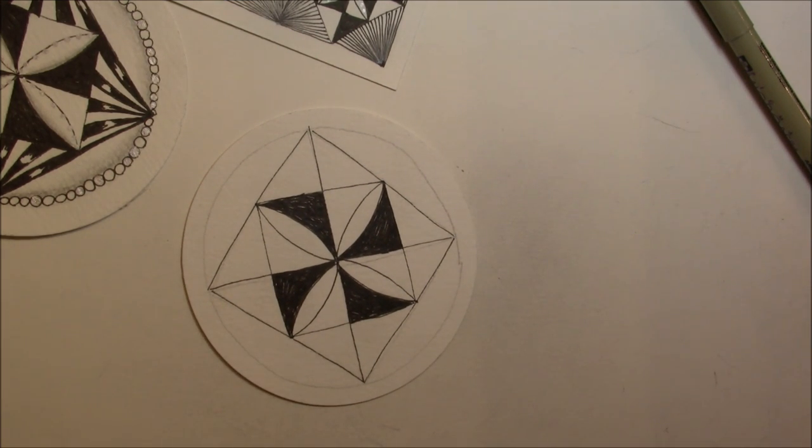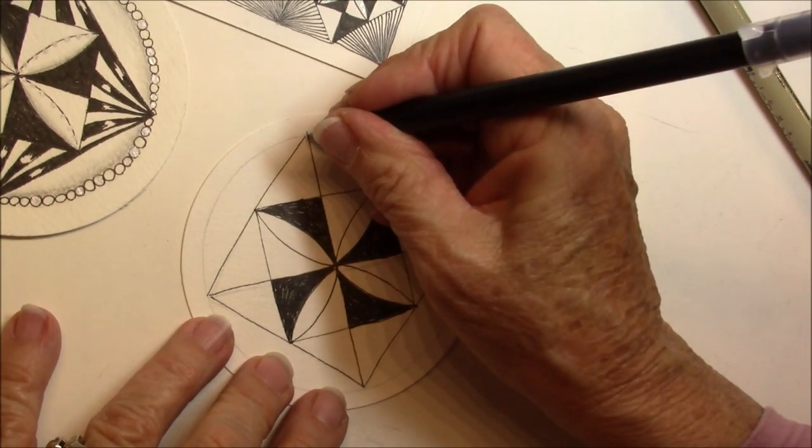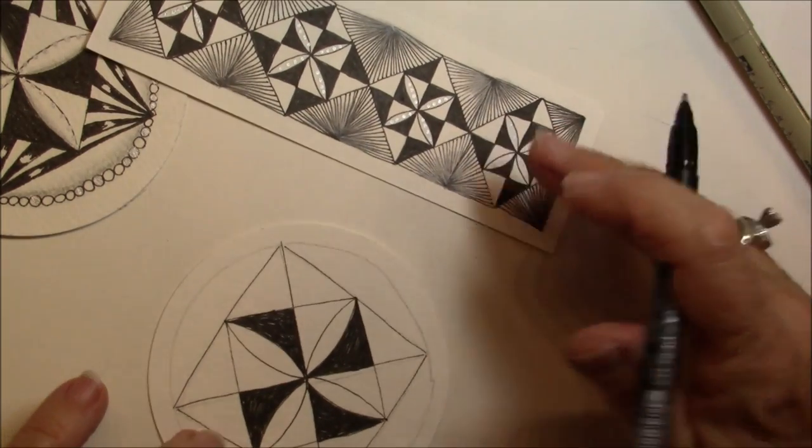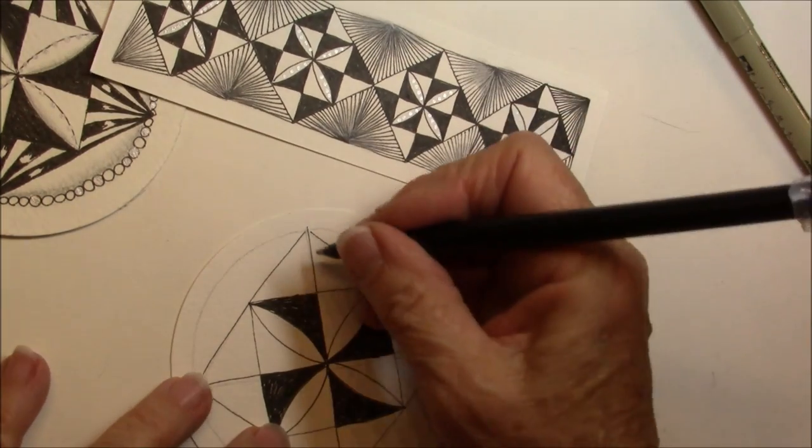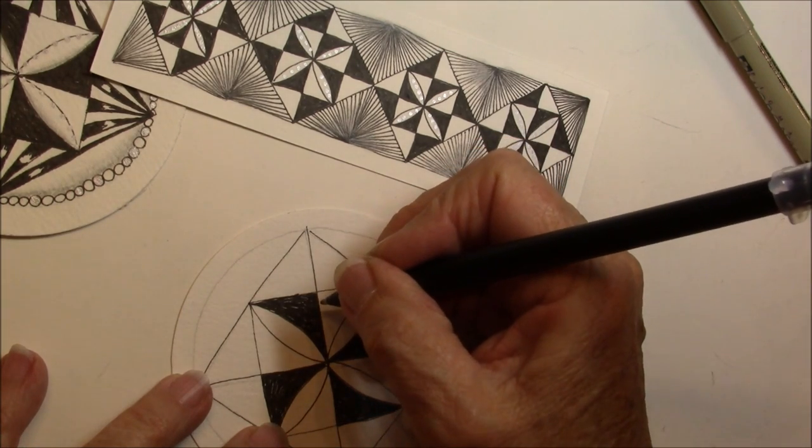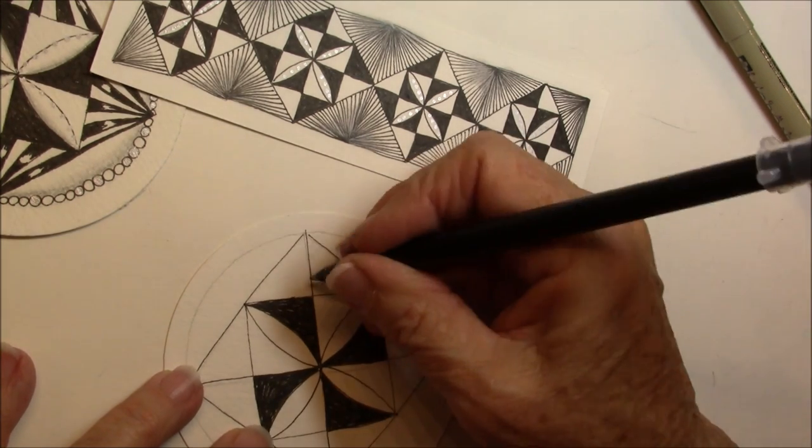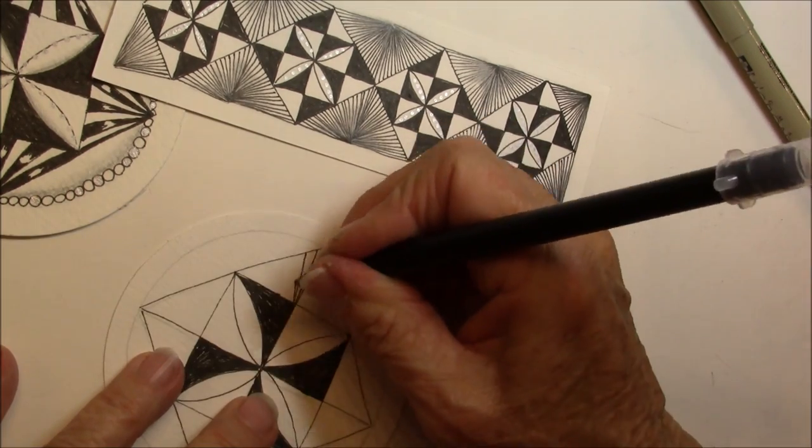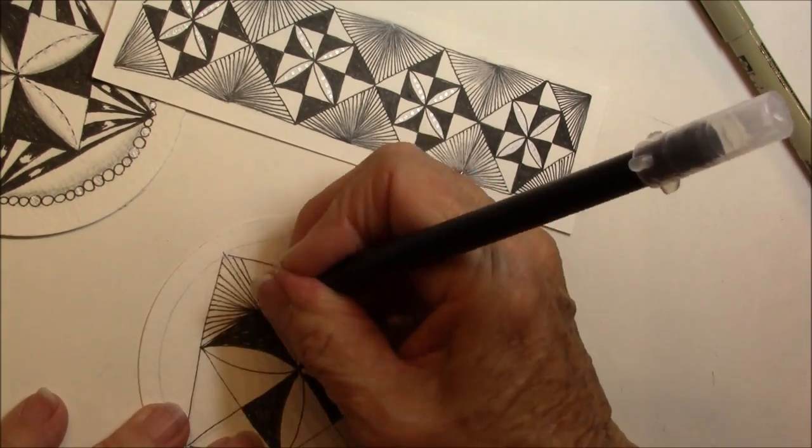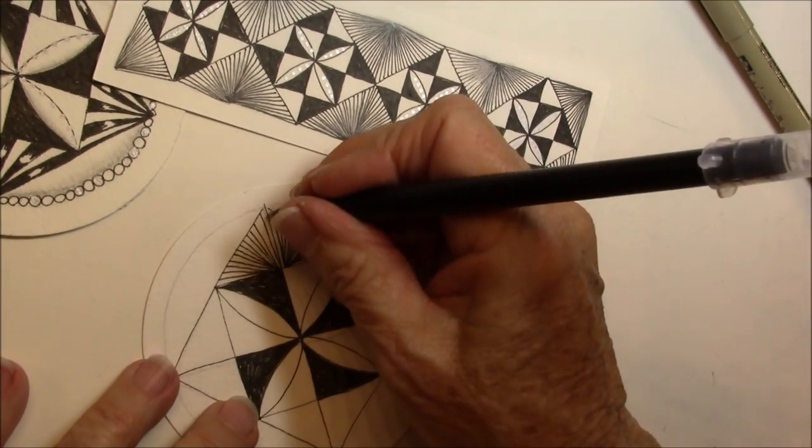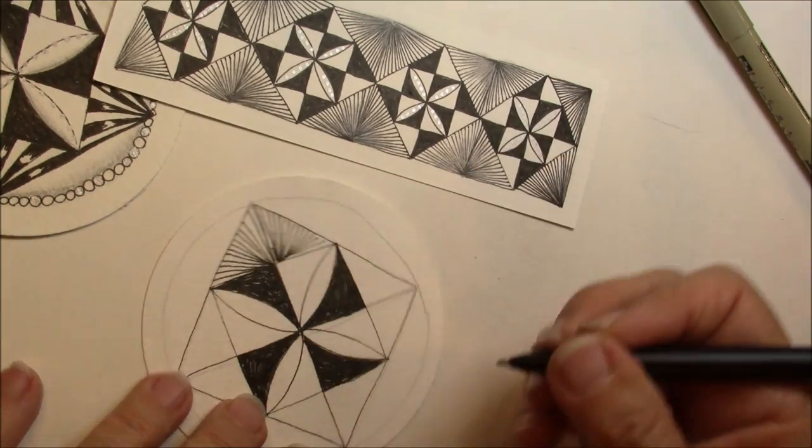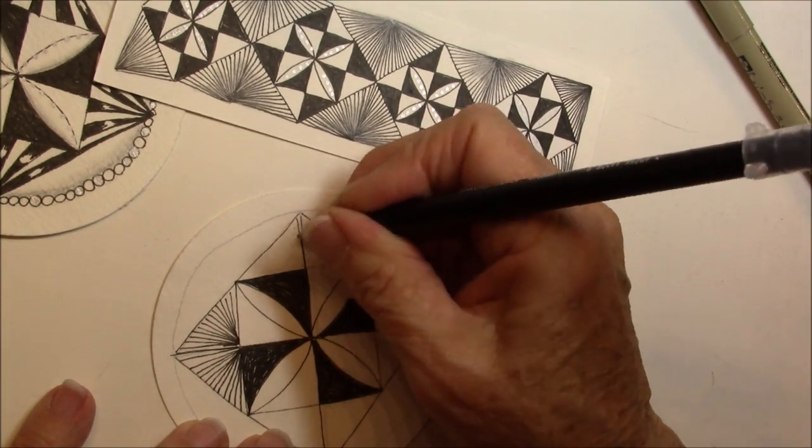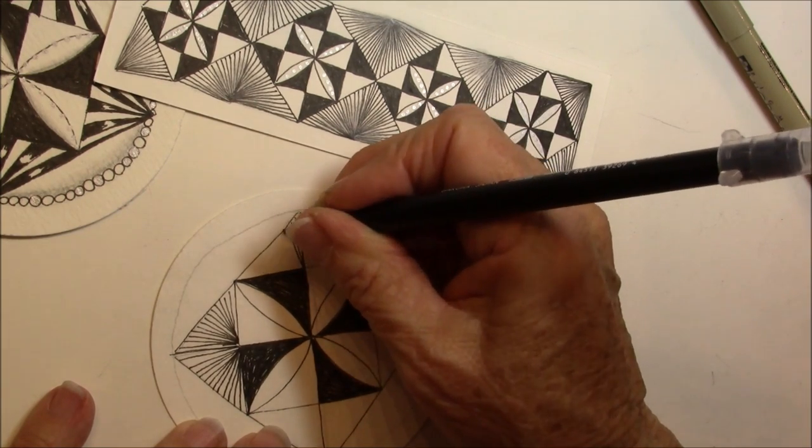Now we're going to take this center piece, and we can do lines like this that radiate from the center to the outside. They can go this way, or we'll do just a little difference. And I love how it builds up in that center.